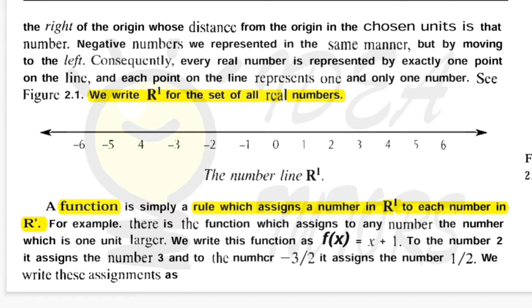For example, if my function is f(x) = x + 1, then each value of x will give a different value to f(x). This is a function. So if I put x = 2 in my function, then f(x) will become 3. This is how I can give any value to x and receive a different value for f(x).